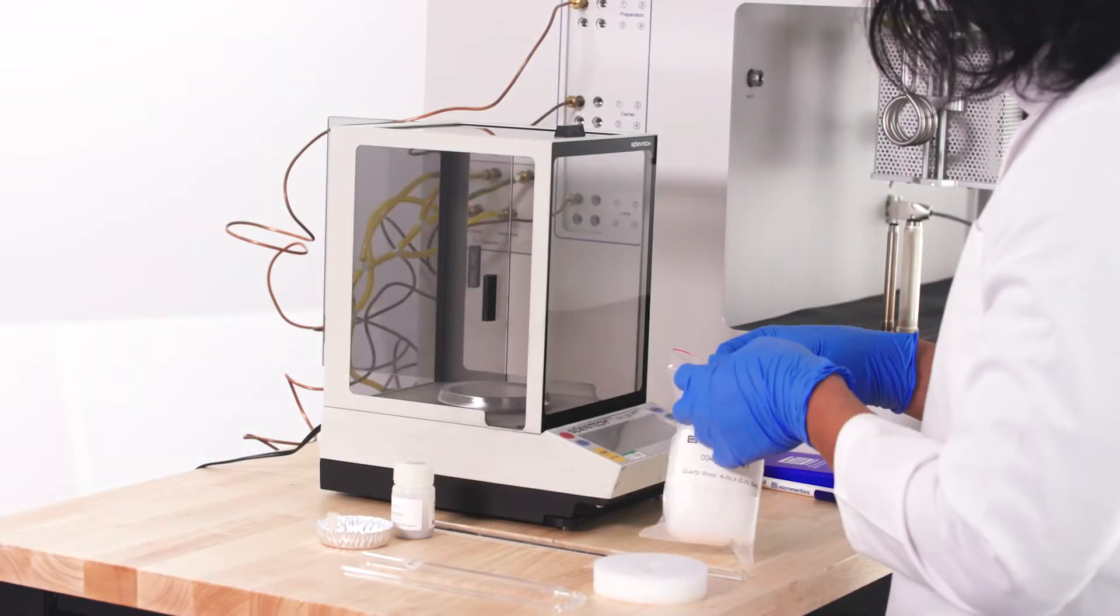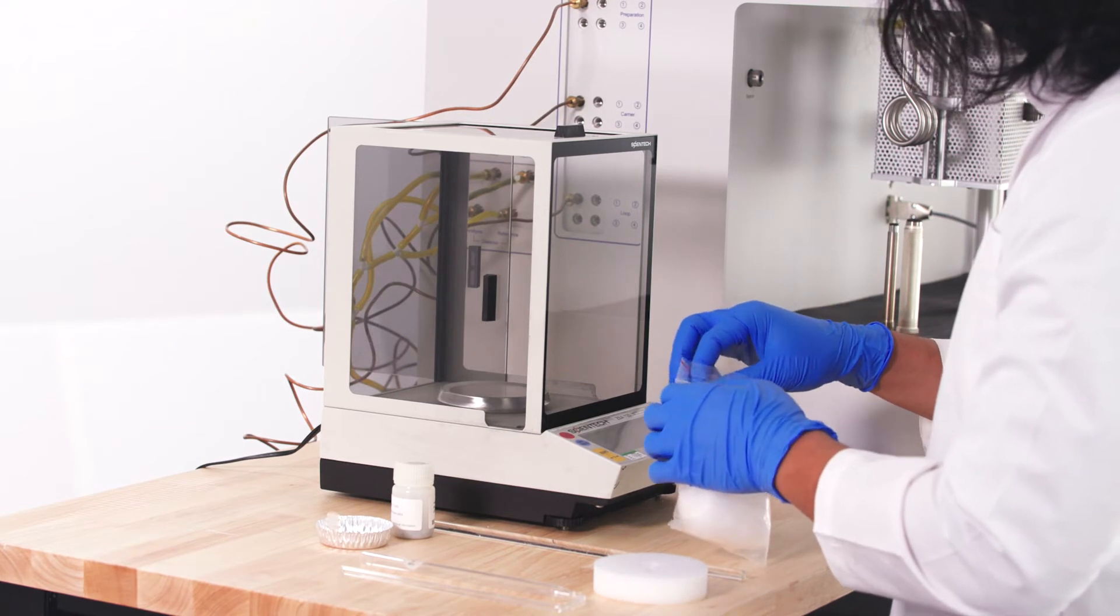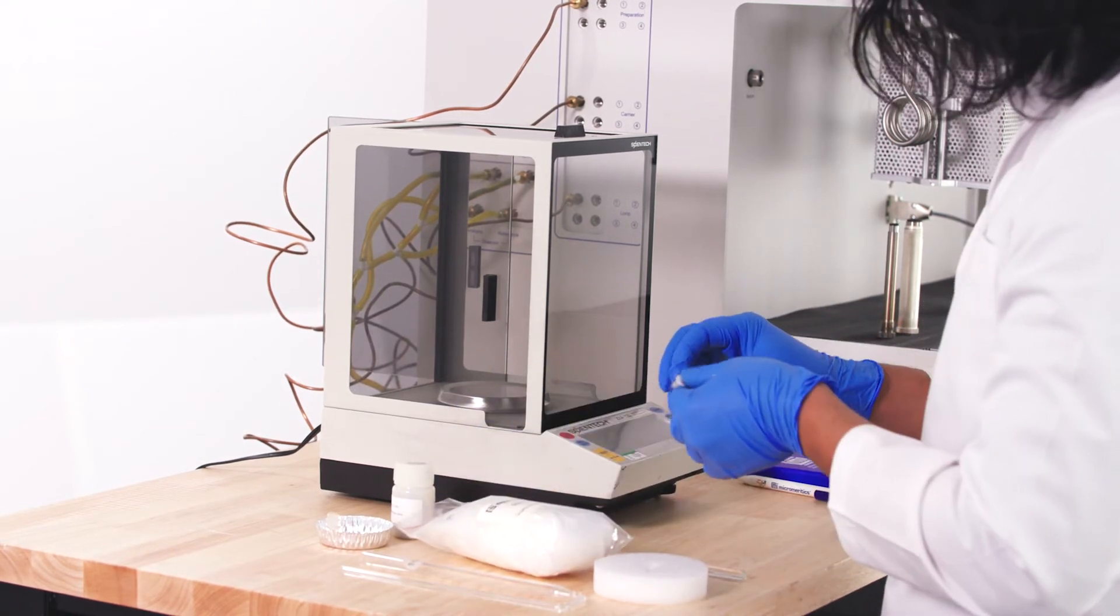Now we are ready to prepare the sample. Place a small amount of quartz wool at the bottom of the sample tube with the provided glass rod.